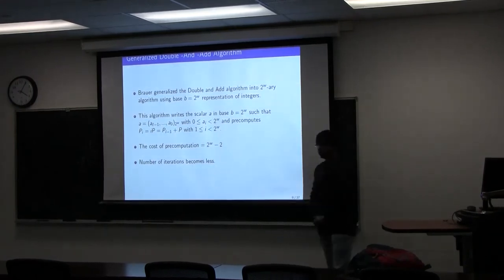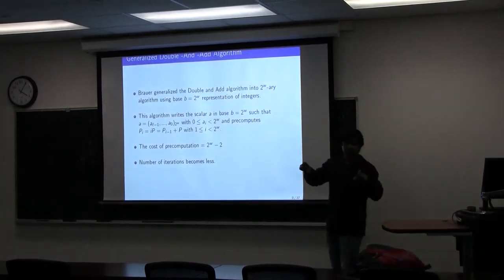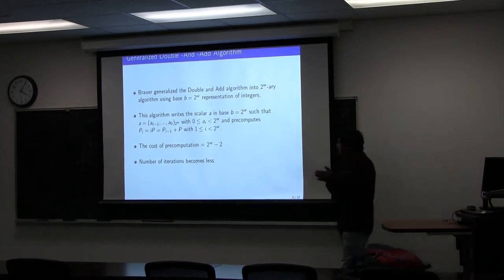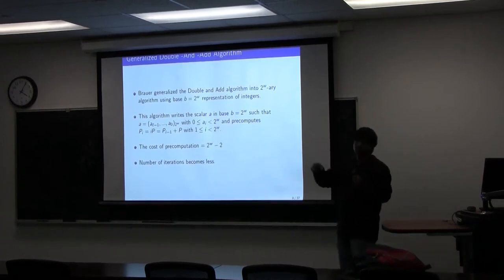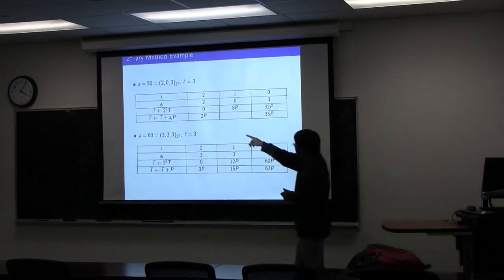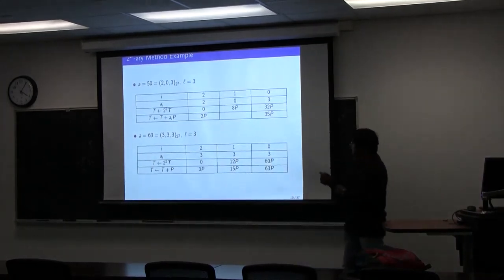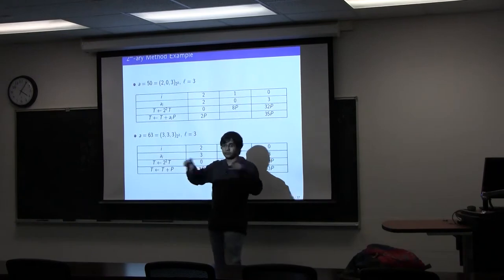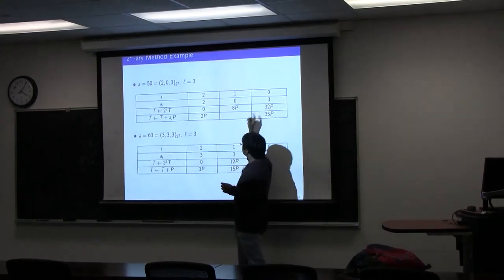Brouwer generalized the double-and-add algorithm: instead of doing it in binary, we can do it in any 2^w-ary representation of a scalar. We express the scalar in 2^w-ary form. Whenever it is zero, we only compute 2^w times P; whenever it is non-zero, we compute 2^w times P and also add a point. For example, to compute 50 times P with w=2, we represent 50 in base-4 as (2, 0, 3).